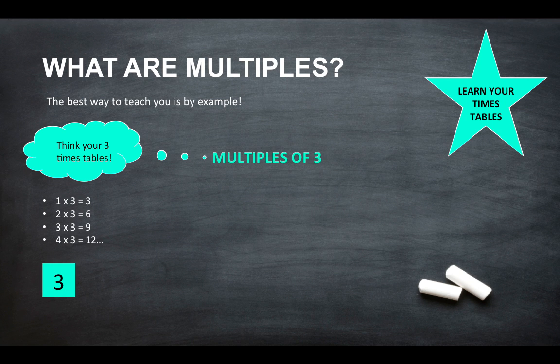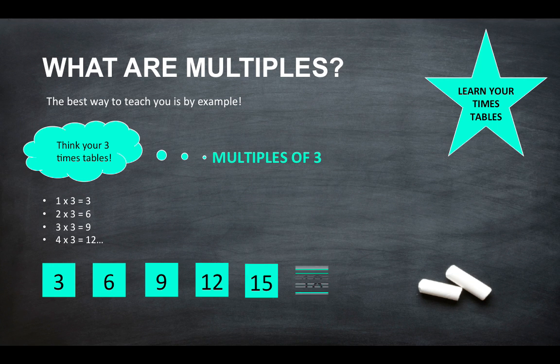So the multiples of three are 3, 6, 9, 12, 15, 18, 21 and so forth. Okay, so it's basically just recalling and reciting your three times tables.